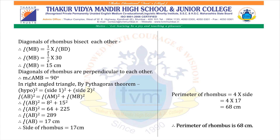Perimeter of rhombus = 4 into side = 4 into 17 = 68 centimeters. Therefore, perimeter of rhombus is 68 centimeters.